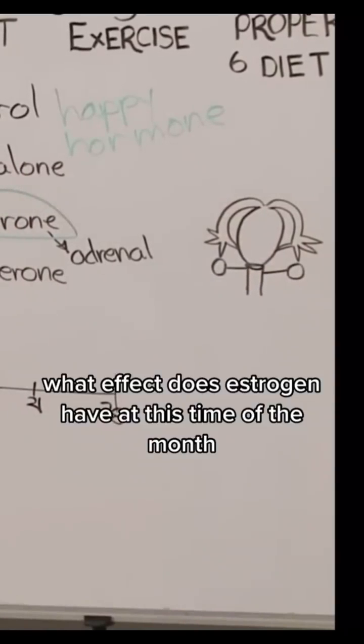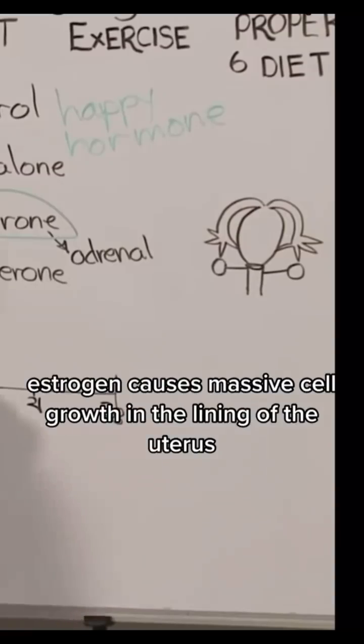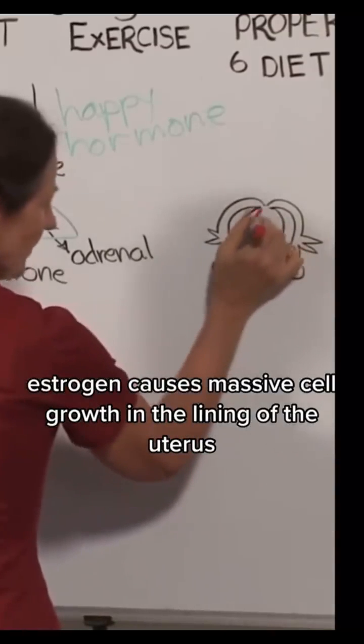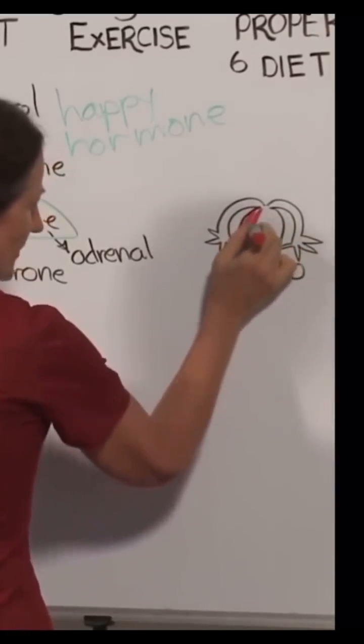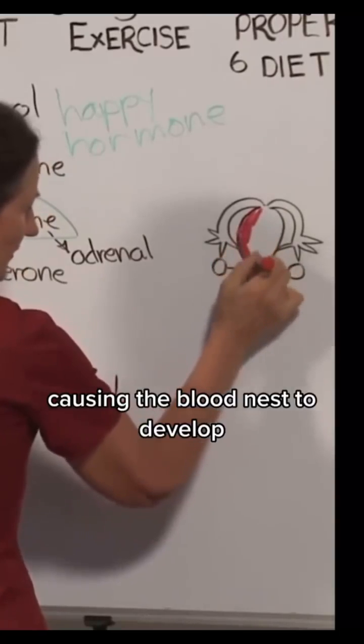What effect does estrogen have at this time of the month? Estrogen causes massive cell growth in the lining of the uterus, causing the blood nest to develop.